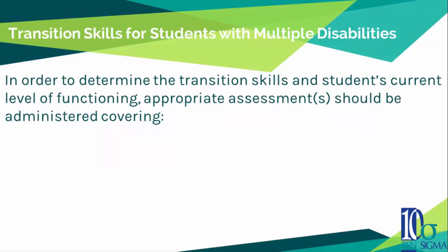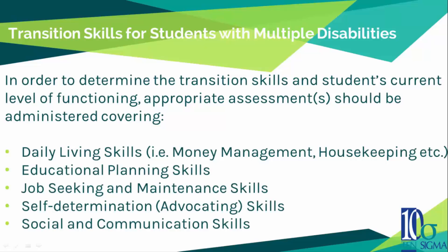In order to determine the transition skills and a student's current level of functioning, appropriate assessments should be administered, covering learning, daily living skills such as money management and housekeeping, educational planning skills, job seeking and maintenance skills, self-determination such as advocating skills, and social and communication skills. If the student has limited verbal skills or is non-verbal, consider using the Multi-Handicapped Assessment by John Zabornek, along with adding a variety of feedback from other teachers and outside agencies that know the student and parents. The Multi-Handicapped Assessment will be included in today's bonuses.